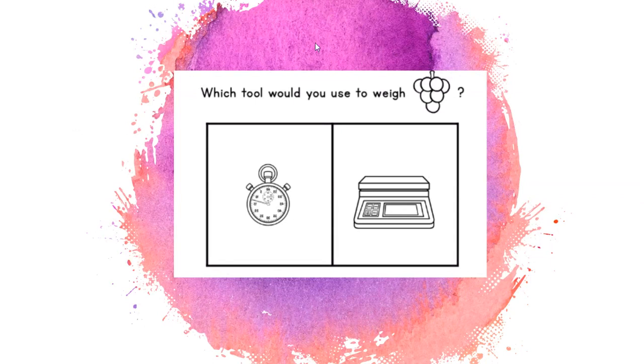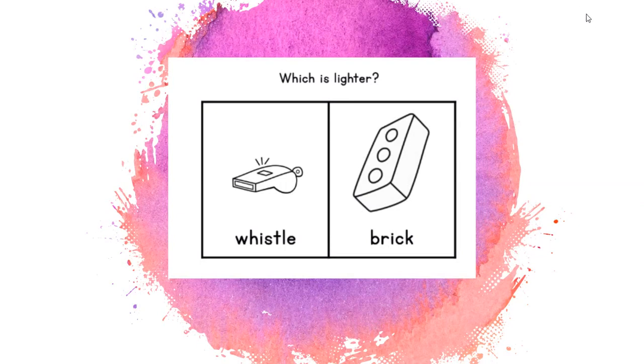So let's think about which tool you would use to weigh grapes. Would you use a clock or a scale to weigh grapes? You would use the scale. Which is lighter, the whistle or the brick? Lighter. The whistle is lighter. It weighs less.